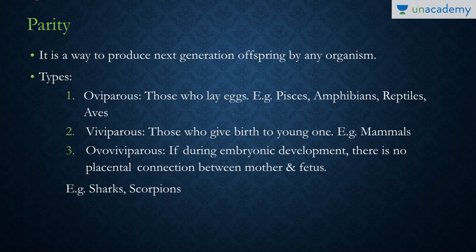Next we talk about parity — the process by which the next generation offspring of any organism is formed. Organisms can be oviparous, viviparous, or ovoviviparous. Oviparous organisms lay eggs; examples include fishes, amphibians like frogs, reptiles including most snakes, and birds.